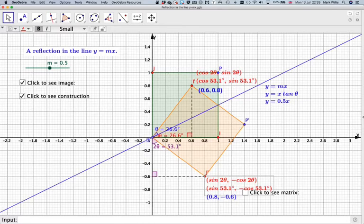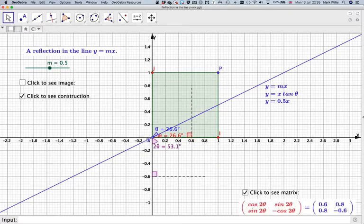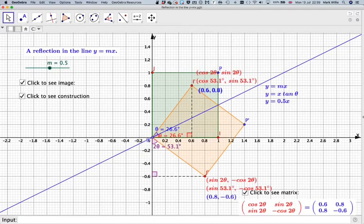I'll just remove the image a minute so I can get the matrix back. If we now want the matrix, what we do is we take this one and this one. So this point has gone to here. So 1, 0 has gone to cos 2 theta, sin 2 theta.